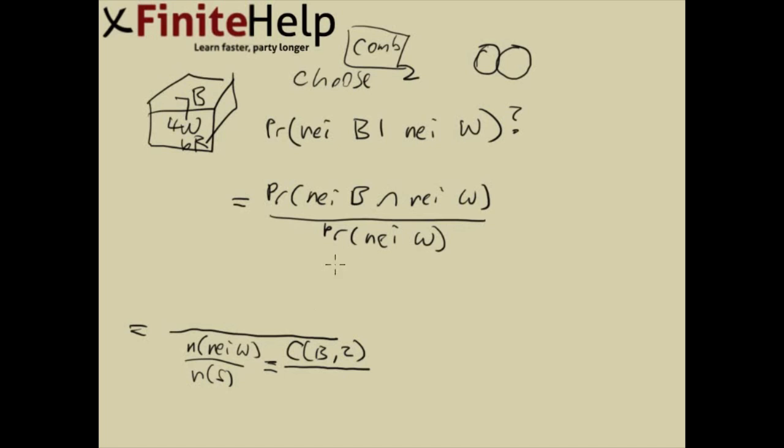And then the bottom here, number in the sample space, that's going to be you have all the balls from the box to choose from, which add up to 7 plus 4 plus 6, which is 17. So we have 17 to choose 2. If you aren't sure about how I did these combinations, go back and revisit chapter 2.3.